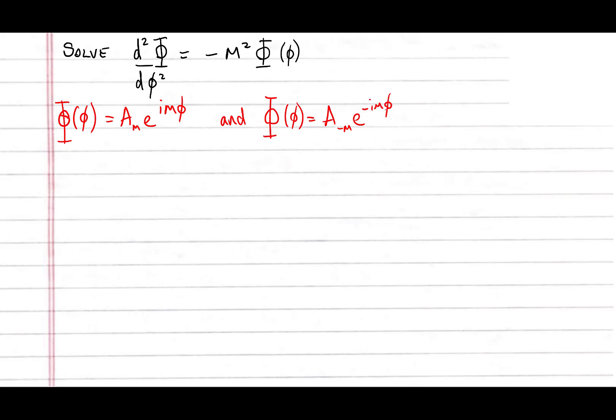We recognize that when we take the second derivative of these expressions, i² = -1, and the m comes down, giving us the m² that appears on the right-hand side of the equation. This returns the eigenfunction, so we can see that these are valid solutions.